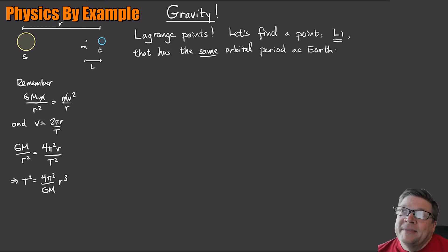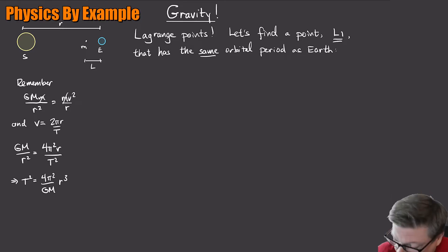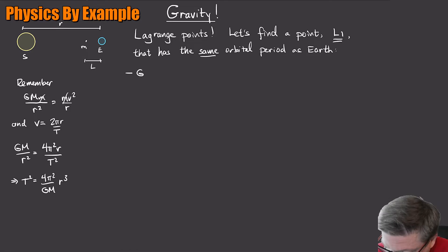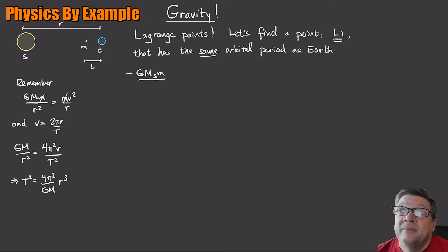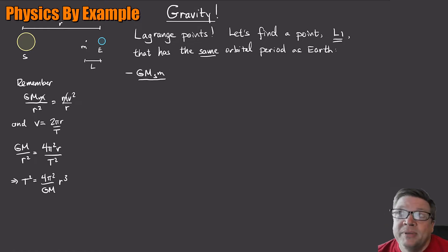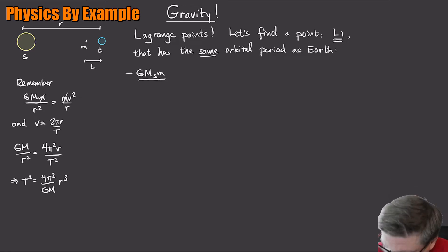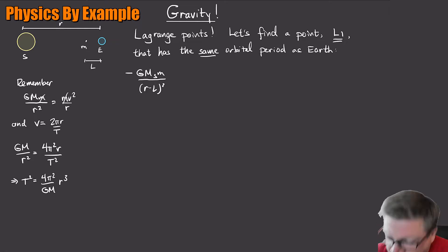That little mass is being acted on by both the Sun and the Earth. The gravitational force due to the Sun is pulling to the left — that's minus G times mass of the Sun times little m, divided by the distance from the Sun. As I have the diagram drawn, the distance between the Sun and the small mass is the total distance R out to the Earth minus this length l, the distance we're trying to find. So that's (R − l) squared in the denominator.